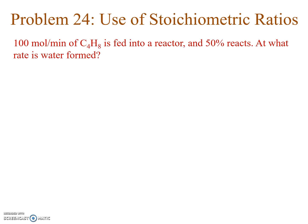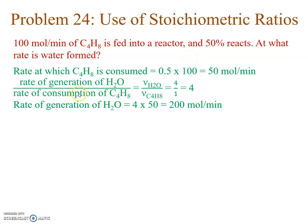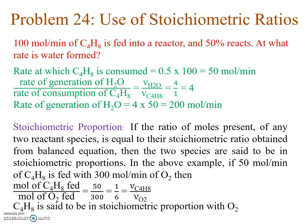If 100 moles per minute of C₄H₈ is fed into a reactor and 50% reacts, at what rate is water formed? Since 50% reacts, only 50 moles per minute of C₄H₈ is consumed. The stoichiometric ratio of the rate of generation of H₂O to the rate of consumption of C₄H₈ is 4/1 = 4. So the rate of water generation = 4 × 50 = 200 moles per minute.